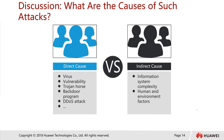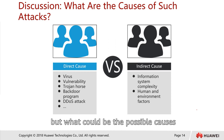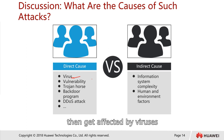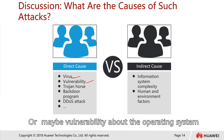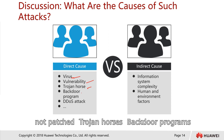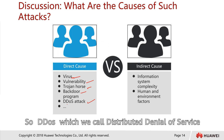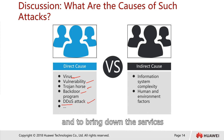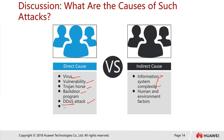What are the causes of such attacks? Direct causes could include viruses, computers connecting to public Wi-Fi infrastructure, vulnerabilities in unpatched operating systems, Trojan horses, backdoor programs, and DDoS attacks — distributed denial of service — which involve massive attacks to bring down services. Indirect causes include information system complexity, where complex workflows make it difficult to trace the root cause of an attack.